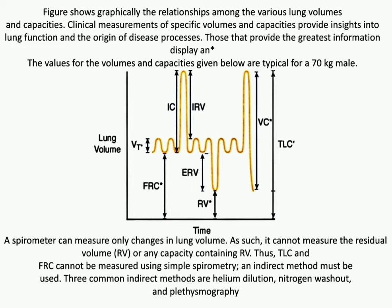Three common indirect methods are helium dilution, nitrogen washout, and plethysmography.